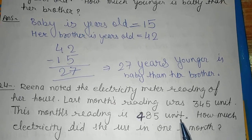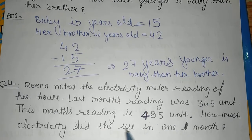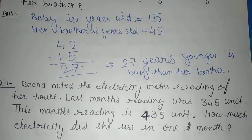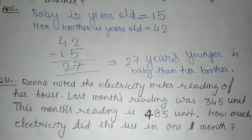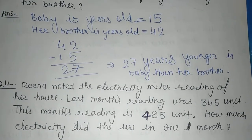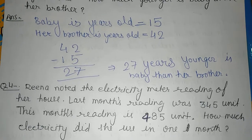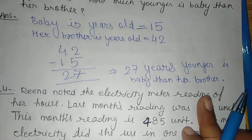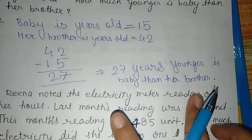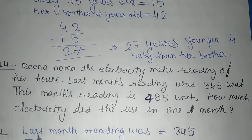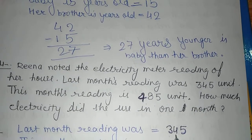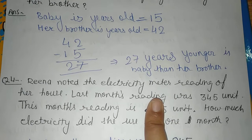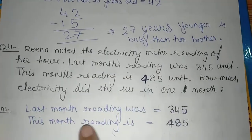How much electricity did she use in one month? This is a big question. I know students, you are looking at the question and not worried about it. I will give you the direct statements — you will hide the numbers in the statements. The statement becomes: 'Last month reading was' equals to 345. And for the other number 485, the statement is: 'This month reading is' equals to 485.